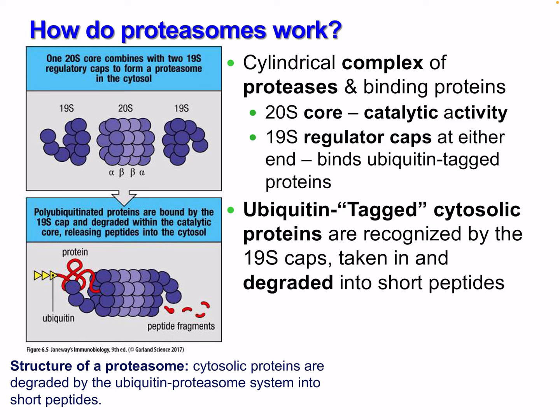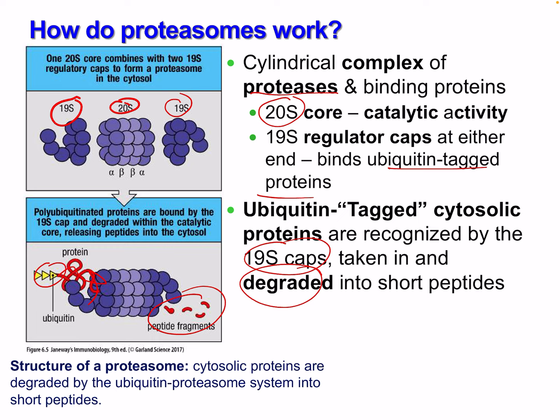How do proteasomes work? A proteasome is a cylindrical complex of proteases and binding proteins. It has a 20S core and two 19S regulatory caps at either end, which bind ubiquitin-tagged proteins. Ubiquitin-tagged cytosolic proteins are recognized by the 19S caps, taken in, and degraded into short peptides. The cytosolic proteins are degraded by the ubiquitin-proteasome system into short peptides, which are then taken by TAP into the endoplasmic reticulum.